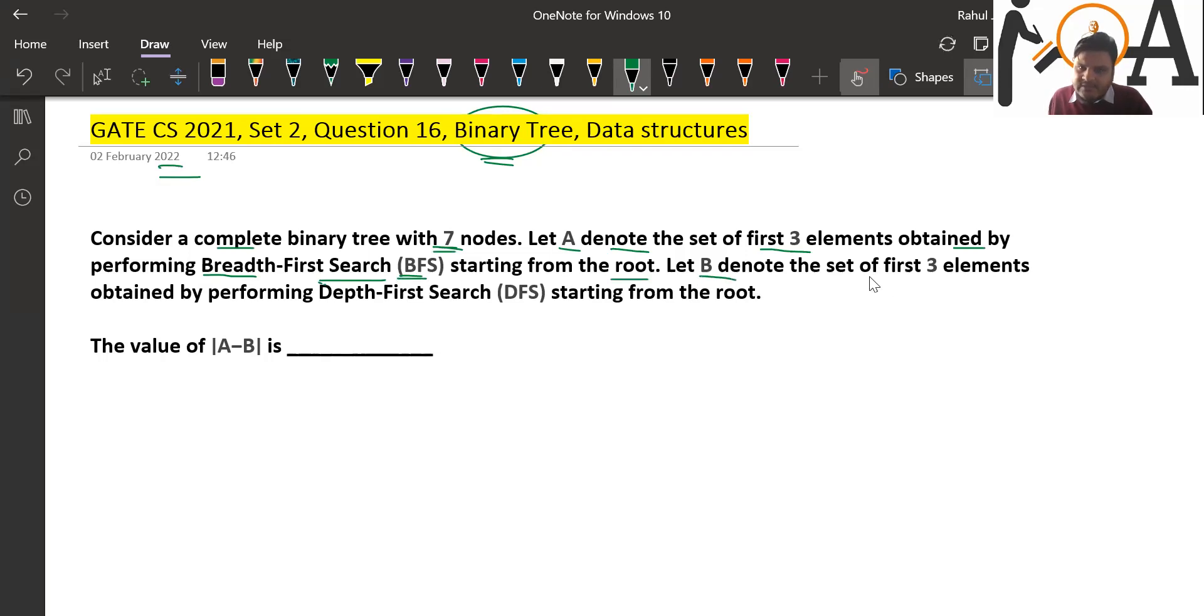Let B denote the set of first 3 elements obtained by performing depth-first search (DFS) starting from the root. The value of |A - B| is what we need to find. So we have a complete binary tree with 7 nodes.